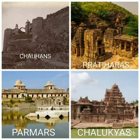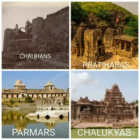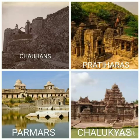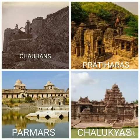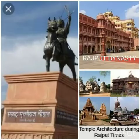Some historians believe that the Rajputs are descendants of foreign tribes who settled in India. It is also believed that the main four clans of Rajputs were born from fire altars, and hence are known as Agnikulaj. These four clans are: Paramars from Malwa, Pratiharas from Rajasthan and Gujarat, Chauhans from Ajmer, and Chalukyas from Gujarat.